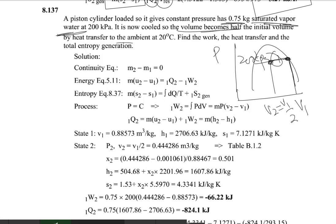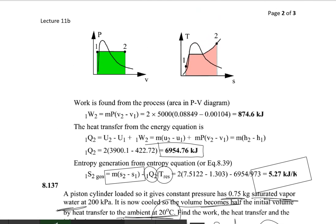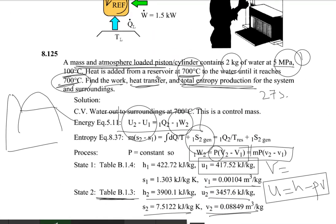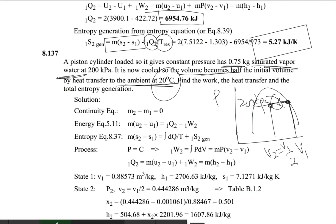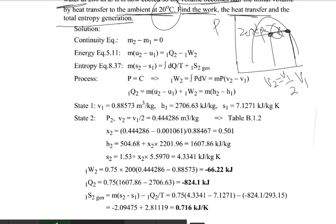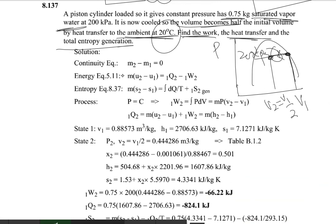The cooling occurs by heat transfer to the ambient, which is at 20 degrees centigrade. Note that unlike the previous problem, this problem does not say the water reaches 20°C — it only says the ambient is at 20°C. Find the work done, the heat transfer, and the total entropy generation. The setup and formulas remain the same.